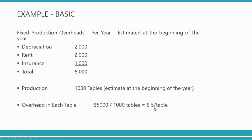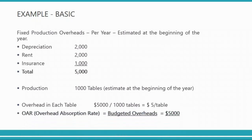When calculating the cost of making one table you add direct materials, direct labor, and then also five dollars for overhead. Direct material and direct labor are direct costs — they are measurable — but this five dollar figure is just an estimate based on budgeted numbers. This five dollars per table is added to the job cost card as the cost of overheads, and this is called OAR — overhead absorption rate — which is where the term absorption costing comes from.